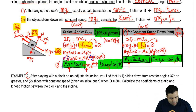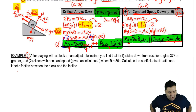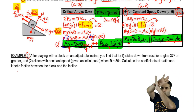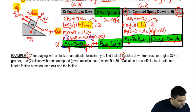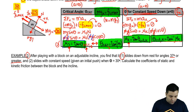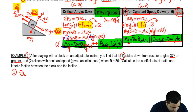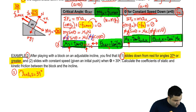Here's an example to illustrate. After playing with a block on an adjustable incline, you find two things. First, the block slides down from rest for angles of 37 degrees or greater. This tells you that 37 degrees is your static critical angle — theta-critical-static equals 37.